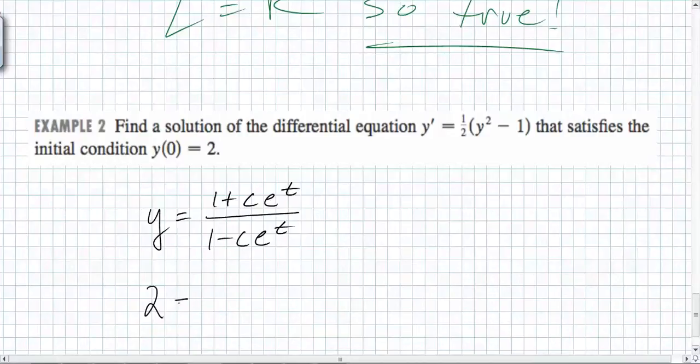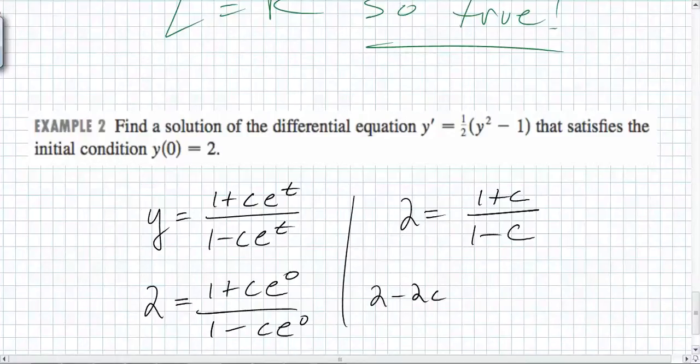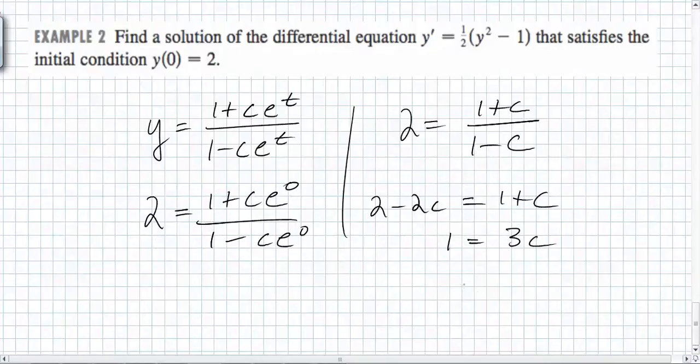Yeah, so two is equal to one plus c e to the zero over one minus c e to the zero. So two is equal to one plus c over one minus c. How do we figure that out? Two minus two c is equal to what? One plus c. So what do we end up with? One is equal to three c. So c is equal to. So when c is equal to one third, you can get the specific solution.